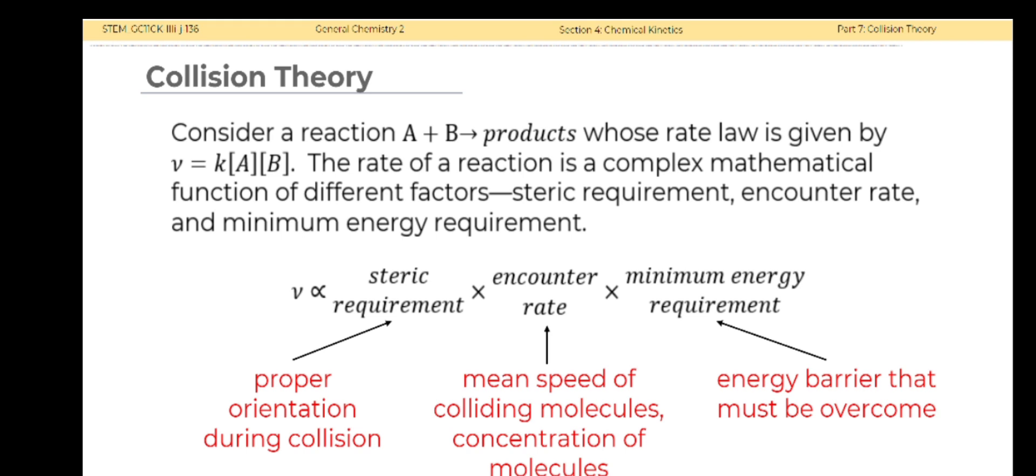Consider a reaction A plus B forming products whose rate law is given by rate equals K times concentration of A times concentration of B. The rate of a reaction is a complex mathematical function of different factors: steric requirement, encounter rate, and minimum energy requirement. The steric requirement describes the proper orientation of A and B during collision. The encounter rate is a function of the mean speed of A and B molecules and concentration of these molecules. The minimum energy requirement is an exponential function of the energy barrier that must be overcome for a reaction to occur.